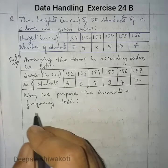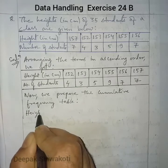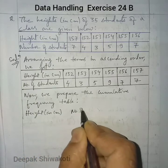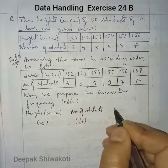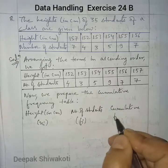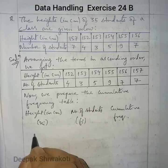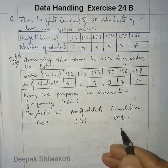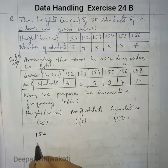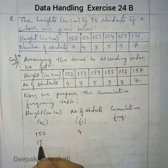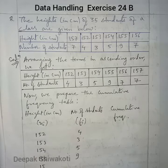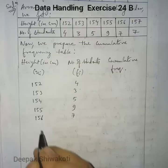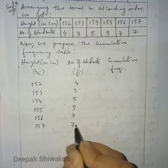Preparing the cumulative frequency table: Xi is height in centimeters, Fi is number of students, and we calculate cumulative frequency. Filling in: 152 — 4, 153 — 3, 154 — 5, 155 — 9, 156 — 7, 157 — 7. Cumulative frequencies: 4, 4+3=7, 7+5=12, 12+9=21, 21+7=28, 28+7=35.